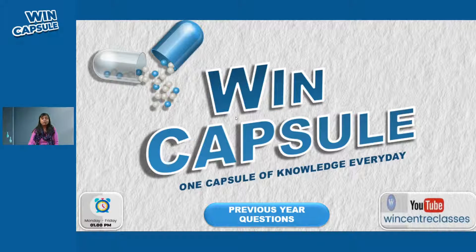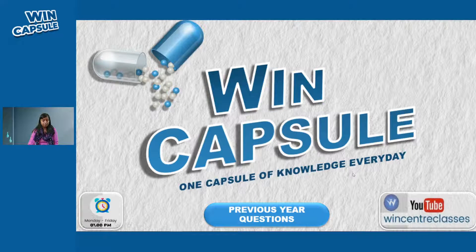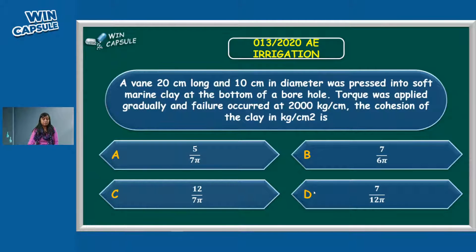We are going to do this in the Wind Capsule. If you want to make the answers in the comments. First question: A vane weighing 20cm long and 10cm in diameter was pressed into soft marine clay at the bottom of a borehole. Torque applied gradually and failure occurred at 2000 kg per centimeter. Find the cohesion of clay in kg per centimeter square.